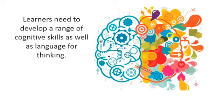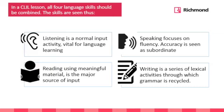Something important in CLIL is that students must develop cognitive skills as well as language skills — cognitive skills being the different levels at which you can think. In a CLIL lesson, all four language skills should be combined where possible: listening, reading, writing, and speaking. For example, give students a video for visual and auditory input, then a short paragraph to read, then write and paraphrase what the paragraph said, and finally discuss what they learned.